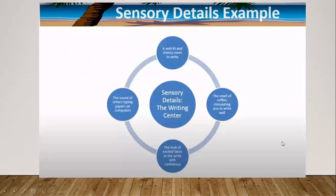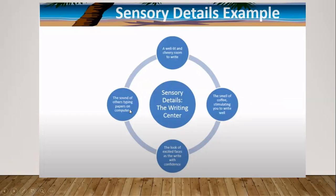Here are some examples of using sensory details to describe a scene. What you want to do is walk into your scene and close your eyes at first, and use all your senses to get an idea of what to say about the scene. You see a well-lit and sunny room to write in. You smell the coffee stimulating you to write well. You see the look of excited faces as they write with confidence, and you hear the sound of others typing papers on computers.